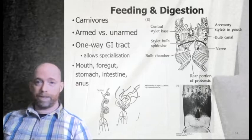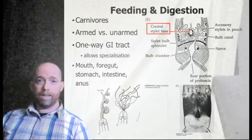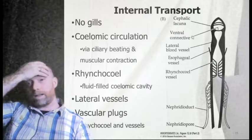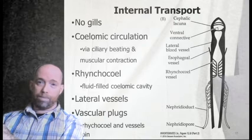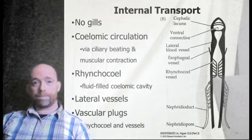Nemerteans are carnivores with a one-way gastrointestinal tract — mouth and an anus — that allows for specialization. There's a central stylet. They have coelomic circulation of respiratory fluids that move around the body via muscular contraction and cilia beating. They have no gills.